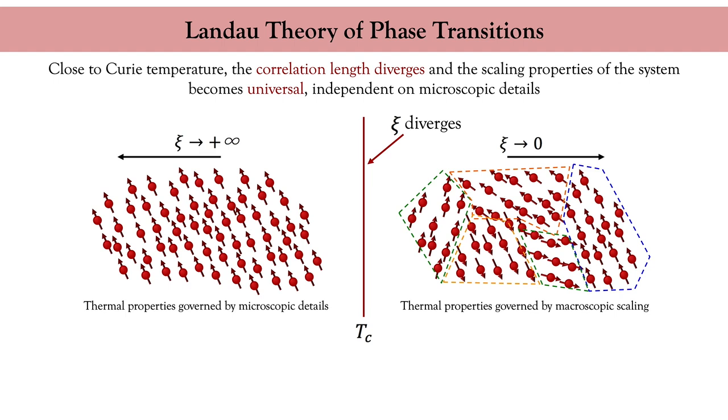As a result, the magnetic system will tend to follow a universal behavior independent of its microscopic properties. Different materials with completely different electronic band structure can show exactly the same scaling behavior close to the transition point.